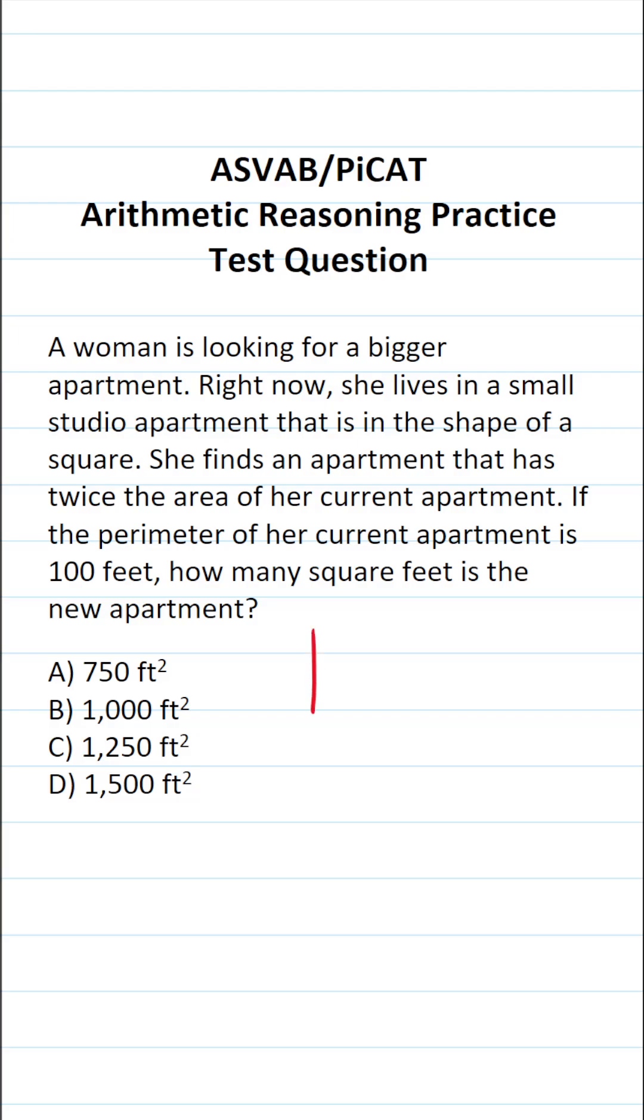So let's start with the fact that this woman currently lives in a studio apartment that's in the shape of a square. You may recall that squares have side lengths that are all equal, and we refer to the side length of a square using the letter variable S. You have to know some basic formulas for the ASVAB and PICAT. More specifically, you have to know how to calculate the perimeter and area of a square. Perimeter is 4 times S, and the area is going to be S squared.